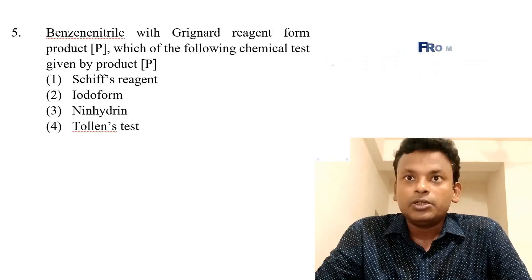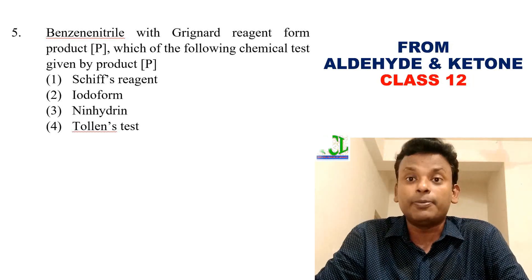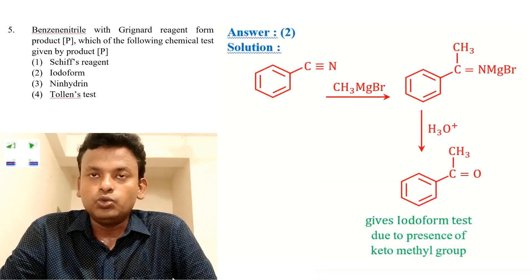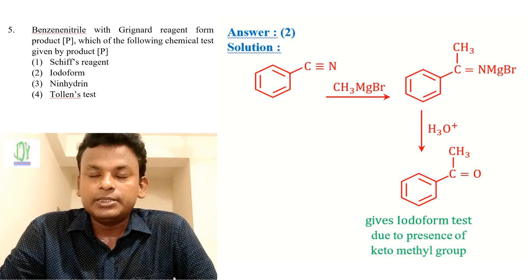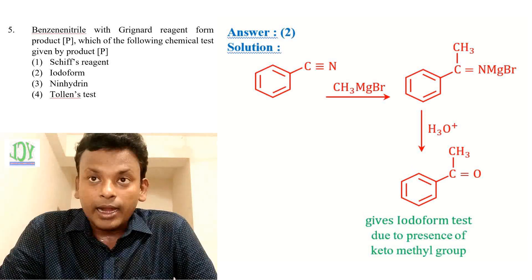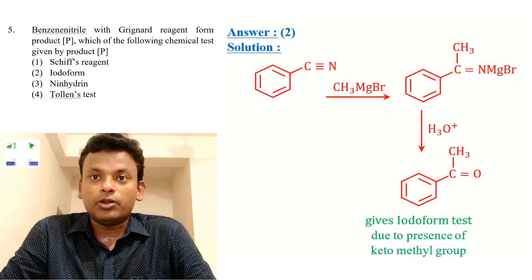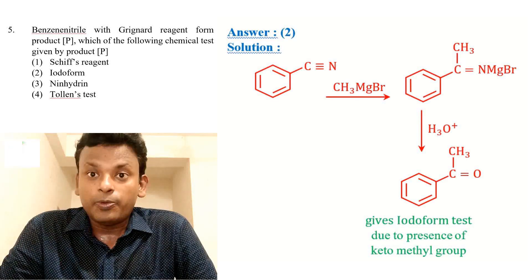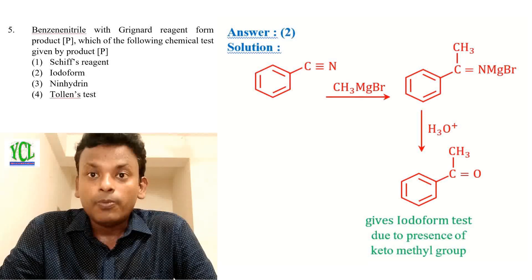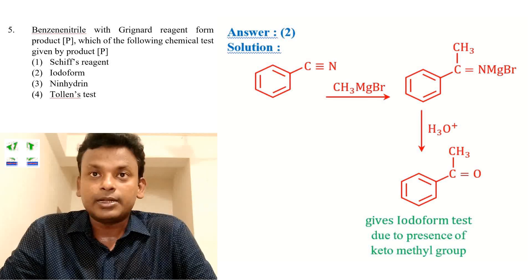Question 5: Benzonitrile is treated with a Grignard reagent to form product P. Which chemical test is given by product P? The answer is option 2. Benzonitrile reacts with Grignard reagent and on hydrolysis forms a ketone, acetophenone. Since a ketone methyl group is present, it gives the iodoform test.